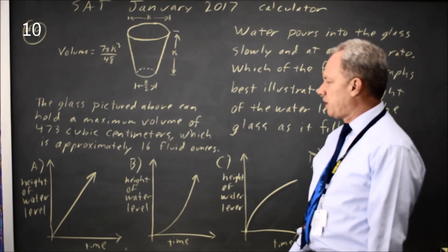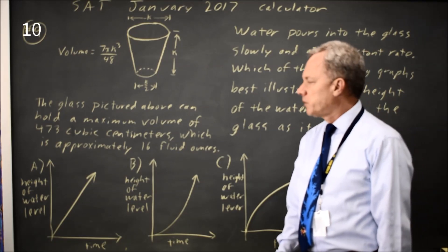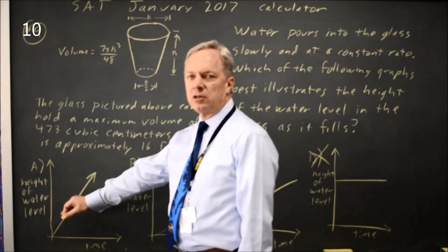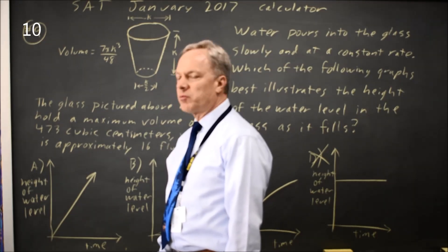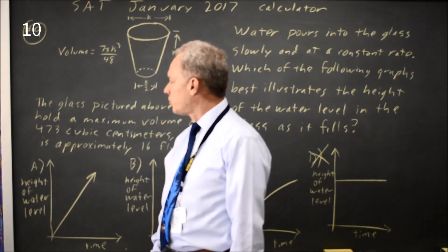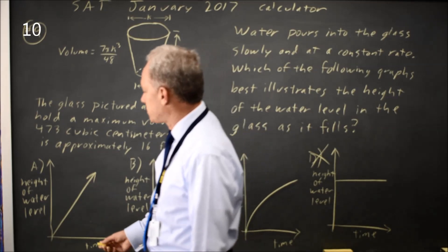So the question is A, B, or C. Many of us are tempted to choose A because for the right circular cylinder they often ask about, if you add water at a constant rate the volume increases at a constant rate, so the height increases at a constant rate.